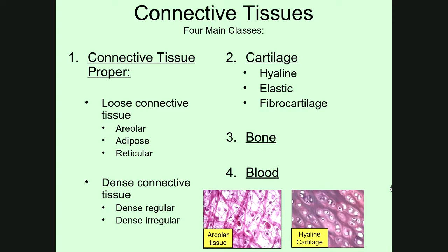Blood is also not a connective tissue proper. The reason is it has a fluid matrix — a fluid ground substance — with cells located within it. But under normal circumstances, blood has no fibers. This is really important because if blood had fibers, it would interfere with its ability to flow. When blood clots — if you have a cut — fibers actually form within the area of that injury to help stop blood flow. That's the only time blood actually has fibers, which is why it is in the other category and not a connective tissue proper.